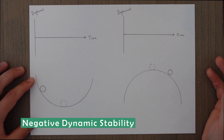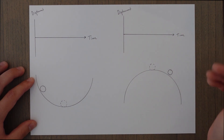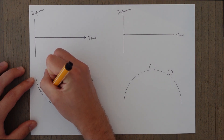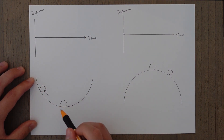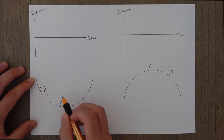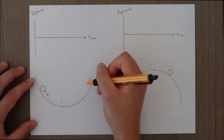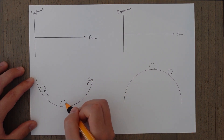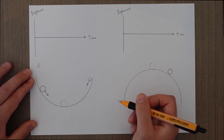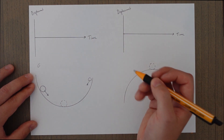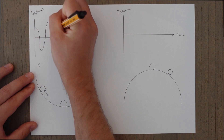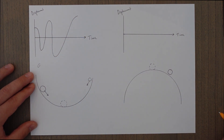Negative dynamic stability is a tendency to diverge over time — or dynamic instability. Thinking about the ball in the bowl with positive static stability: if for some reason it gains speed as it passes through the zero point, it deflects further up the other side, then comes down with more force, gains even more speed, and keeps getting further and further away as it rolls up and down the bowl. Graphically, the displacement oscillates back and forth, getting slowly further away as time increases.